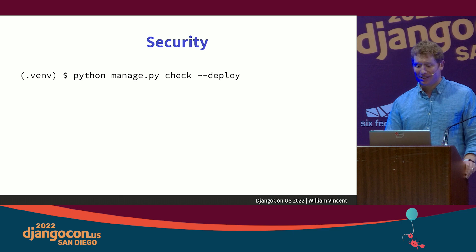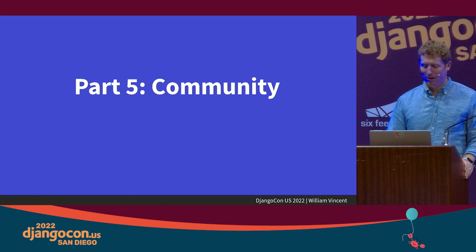Security: run the Django deployment checklist — it gives you a list of things to do before deploying, especially around HTTPS. And change your admin URL from the default `/admin/` to something else.